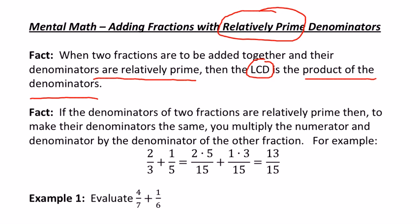Our factor number two says that the denominators of two fractions are relatively prime, then to make their denominators the same, you multiply the numerator and denominator by the denominator of the other fraction. That's a lot of use of the word denominator and numerator, but what it's saying is you multiply the two times the five to be the numerator of one of the fractions, and the three times the one to be the numerator of the other.